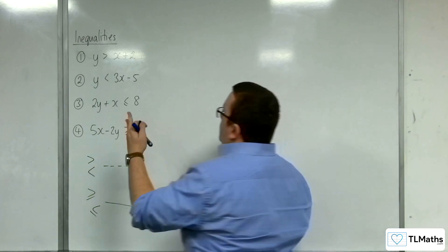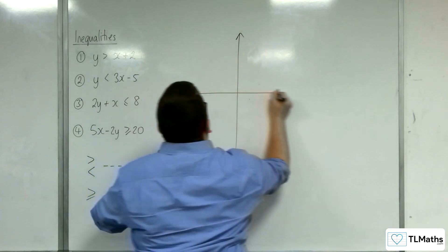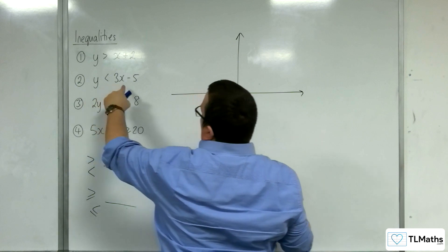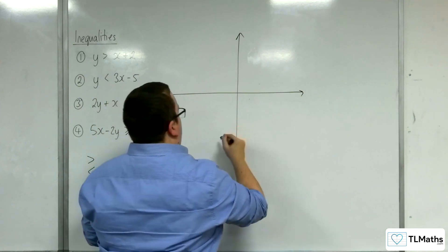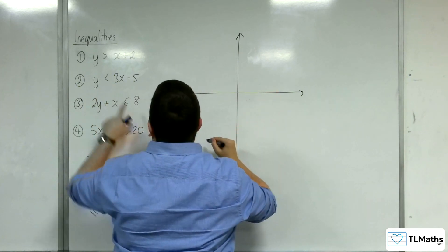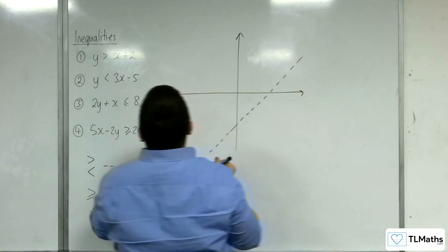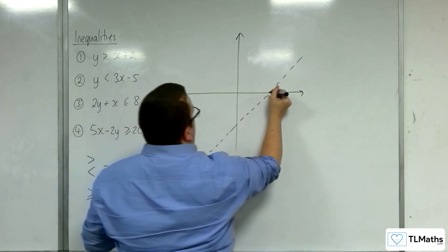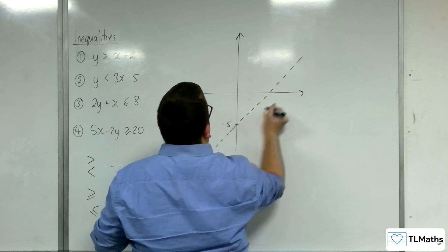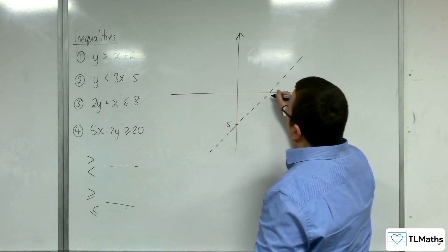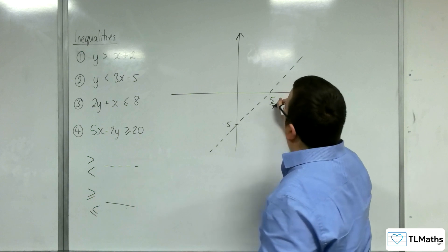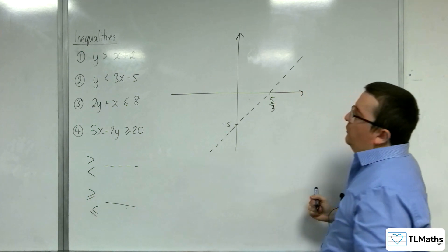So, number two. The region I want. Y equals 3X take away 5 is a line down here. Now, it's less than, so a dotted line, like so. Now, this point would be minus 5. This point would be 5 thirds. So, that's when Y is 0.